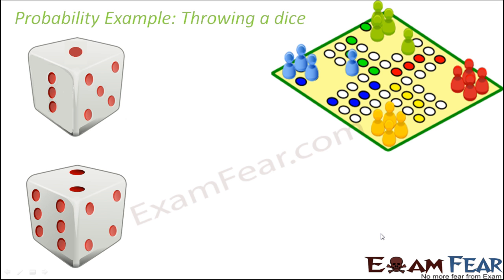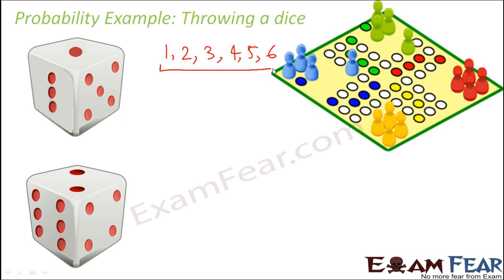So, what are the possible outcomes when you throw a dice? The outcome would be 1 — the dice will show just one value. But what are the possible values? The possible values are 1, 2, 3, 4, 5, 6. These are the possible outcomes when you throw a dice. You might end up seeing a 1, 2, 3, 4, 5, or a 6 — but you cannot see anything other than these. These are the only possible outcomes.